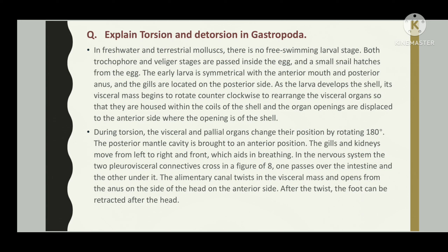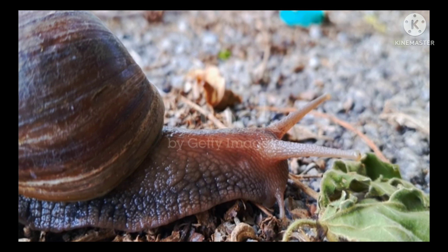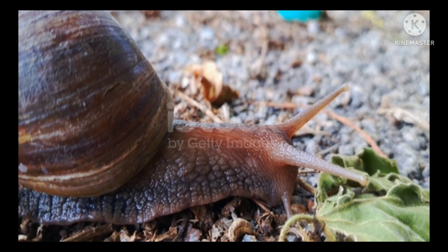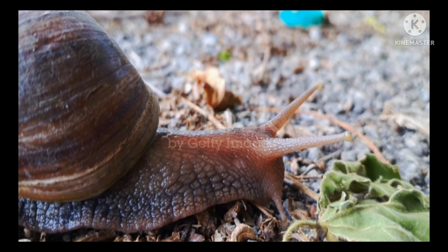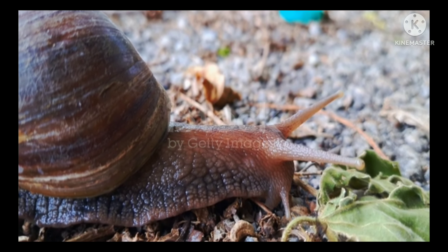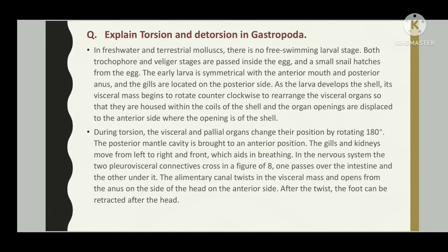During torsion, the visceral and palleal organs change their position by rotating 180 degrees. The posterior mantle cavity is brought to an anterior position; the gills and kidneys move from left to right and front, which aids in breathing. In the nervous system, the two pleuro-visceral connectives cross in a figure-of-eight — one passes over the intestine and the other under it. The alimentary canal twists in the visceral mass and the anus opens on the anterior side, on the side of the head.